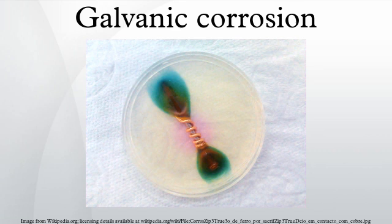Galvanic Series: all metals can be classified into a galvanic series representing the electrical potential they develop in a given electrolyte against a standard reference electrode. The relative position of two metals on such a series gives a good indication of which metal is more likely to corrode more quickly. However, other factors such as water aeration and flow rate can influence the rate of the process markedly.